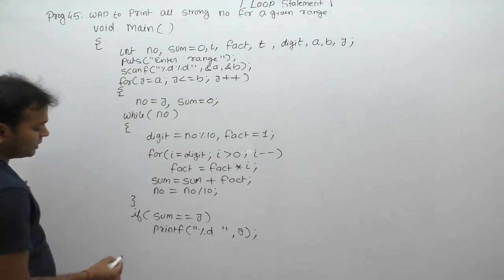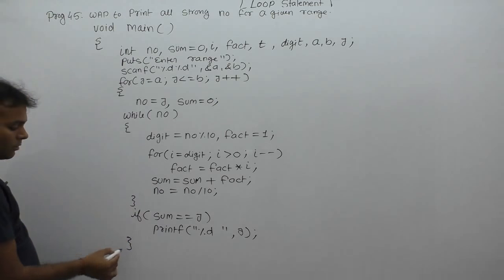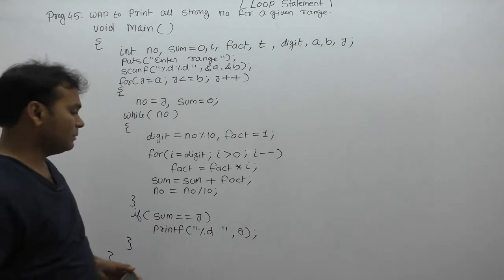Closing the for loop, closing the while loop, closing the for loop, closing the main function. This is the current logic through which we can handle the range.